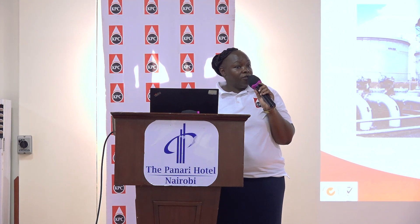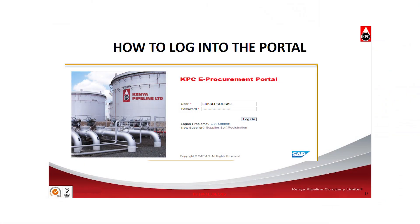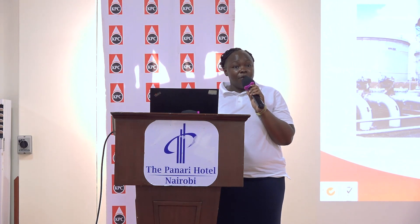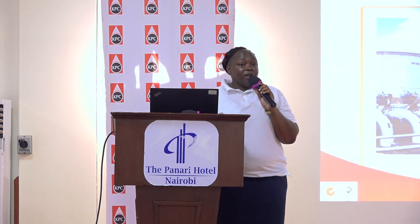So how do you log in to the portal? Once you have received your user ID and password, under user, you will enter the user ID that has been sent to you. Normally you get the user ID within 24 hours, but you should also be able to get it immediately. If you do not receive it, write to srmsupport@kpc.co.ke. Enter the user ID that has been sent — not your email address — then enter the password that has also been sent. You can change your password, but you cannot change your user ID.